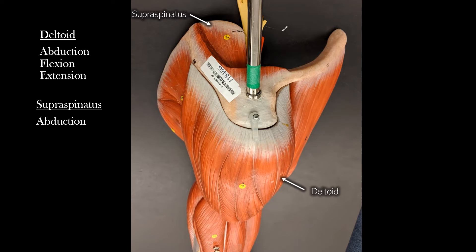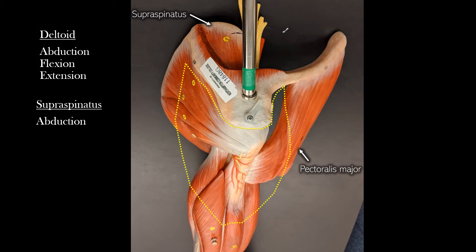Also included on the arm model is the pectoralis major — you can see the entire thing if you're looking at a torso model, but it's included on the arm model because its insertion point is on the humerus, making it a humerus mover. The pectoralis major can pull the humerus forward, which is flexion at the shoulder, and because its origin is on the body, it will bring the arm closer to the midline, so adduction at the shoulder.